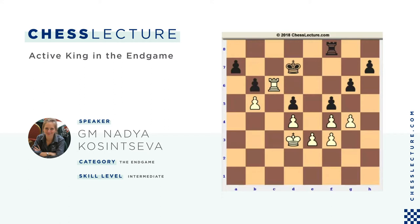Akiba Rubinstein, playing white, decided to transfer his king to the kingside to attack the black pawns there, and the move he played was King e2. It seems very logical — the king is heading to h4, g5, h6, and doing so white can bind the black rook to protect the pawn on h7, then focus on attacking other pawns. In the game, black played Rook f7, not wanting to leave the f-file.